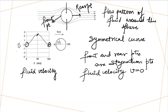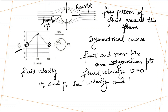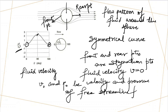We are plotting V squared upon V-naught squared here. We are taking V-naught and P-naught as the velocity and pressure of the free streamline flow. So at 90 degrees, our velocity squared is 2.25 V-naught squared — this is the maximum at this point. And you can see in the flow pattern, because the streamlines are closer here.